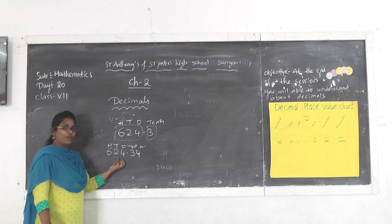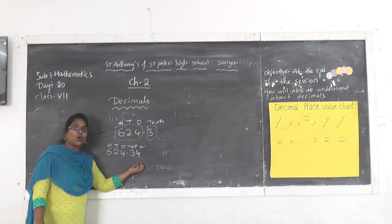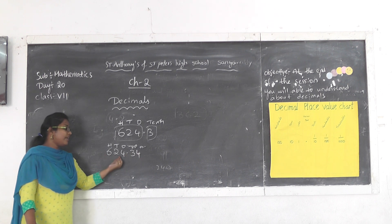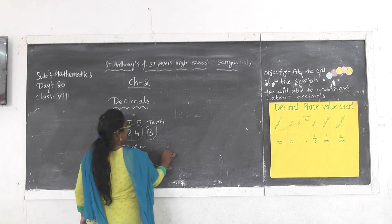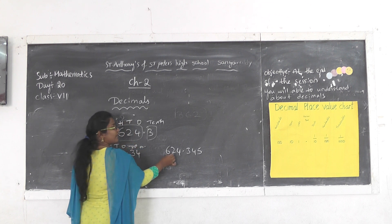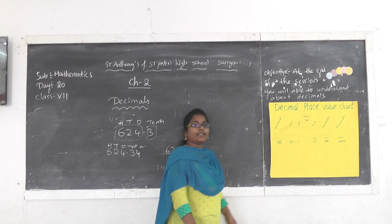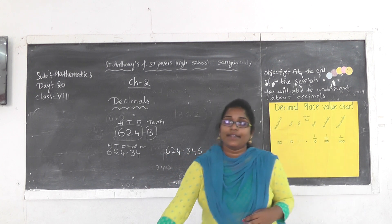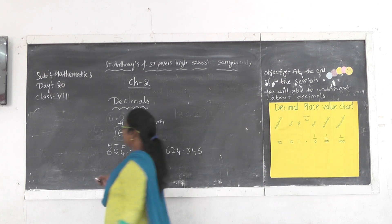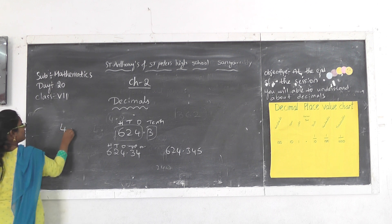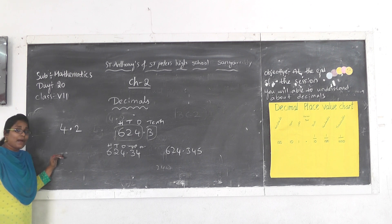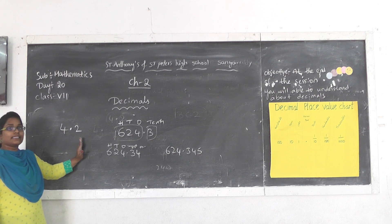For example, 624.3 — we are not supposed to read it as just '64'; we have to read it as sixty-four point three four. For example, the number 624.345 — we read it as six hundred twenty-four point three four five. We have two parts: the whole part and the decimal part.